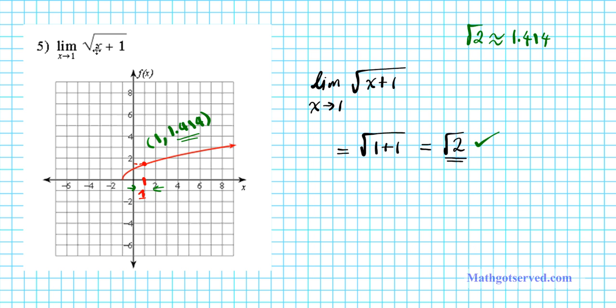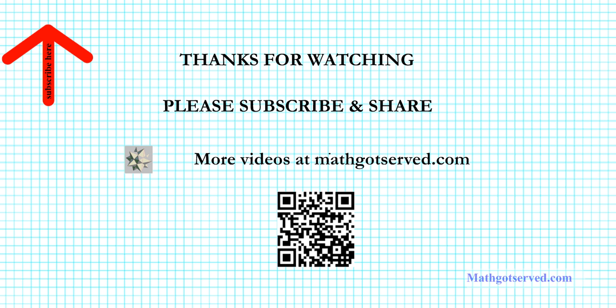So when working algebraically, you can find limits by direct substitution. But graphically, try to find a point — the y coordinate of the point that you're approaching from both sides is normally the limit that you're looking for. Now that you're done, go ahead and try out some practice problems. Thanks so much for taking the time to watch this presentation. Feel free to subscribe to our channel for updates to other tutorials such as this. More clips can be found on mathserve.com. Thanks again for watching and have a wonderful day.